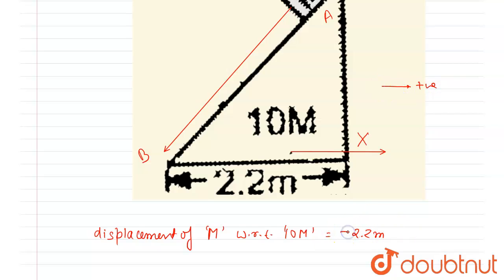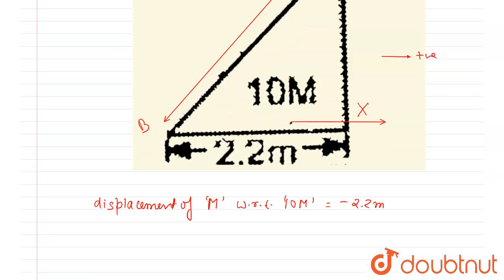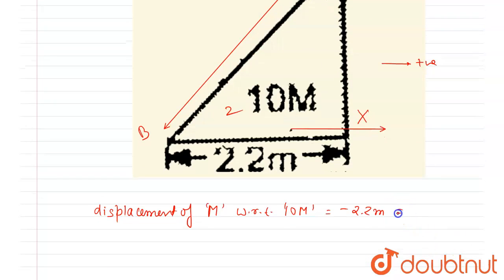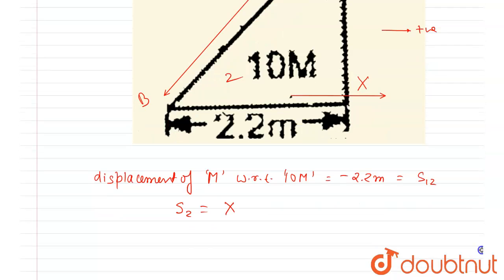So let's take this direction as positive, so I will write here minus 2.2 meters. Now let's call the smaller block as block 1 and the wedge as block 2. The displacement of block 1 with respect to the ground equals displacement of block 1 with respect to block 2, plus displacement of block 2, which is x.